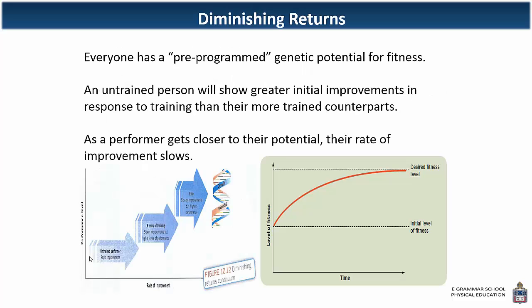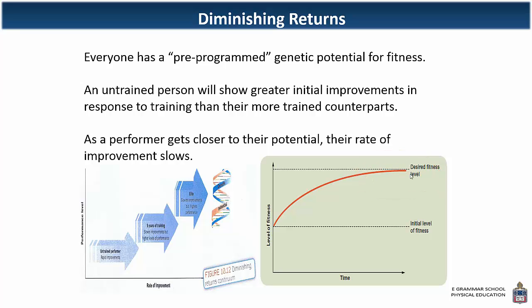Diminishing returns: you can see here that with level of fitness, it starts out at a baseline and you get a fast rise. However, when you get closer to your desired fitness level — or genetic ceiling, the highest you can go — improvements taper off. An untrained person will show greater improvements in response to training than their more trained counterparts.